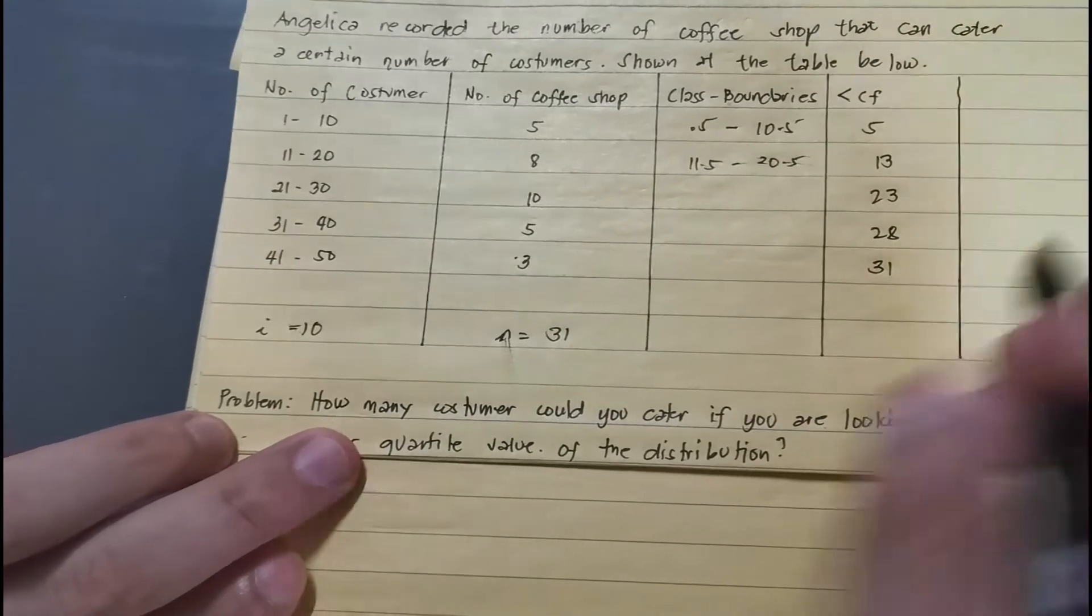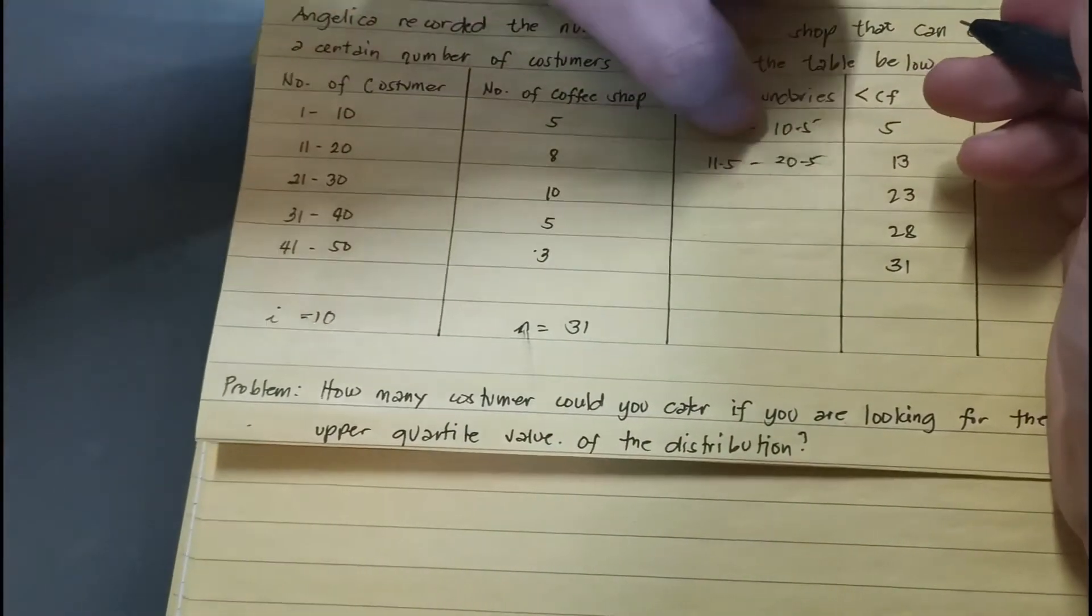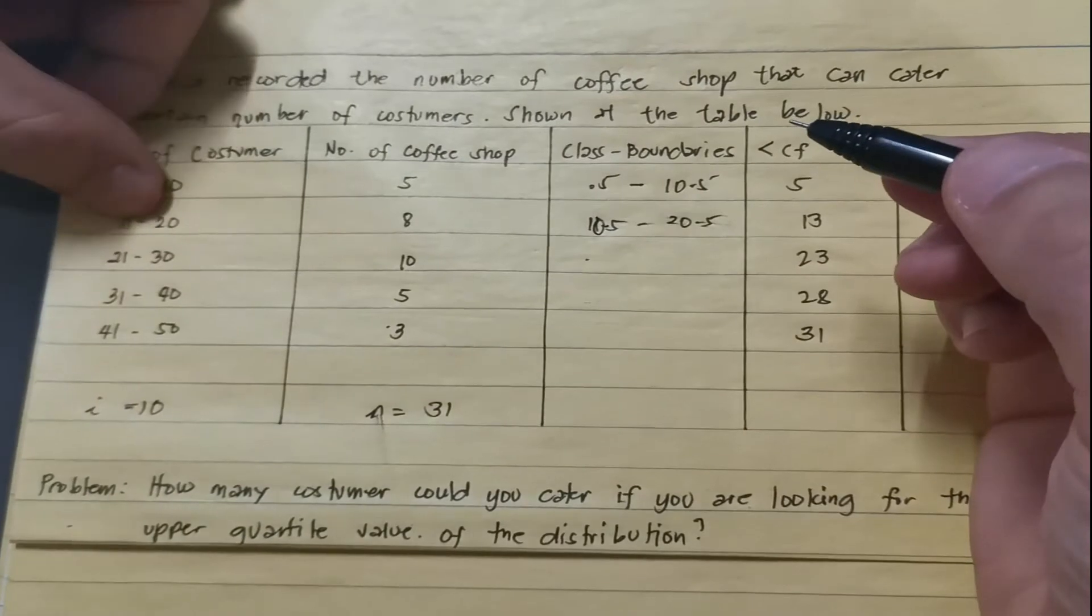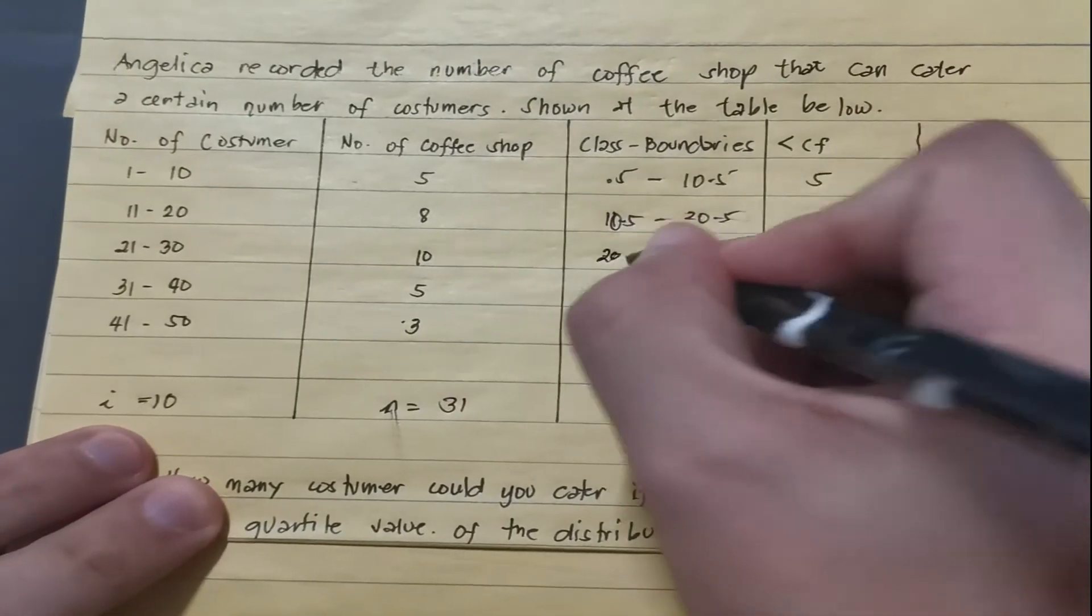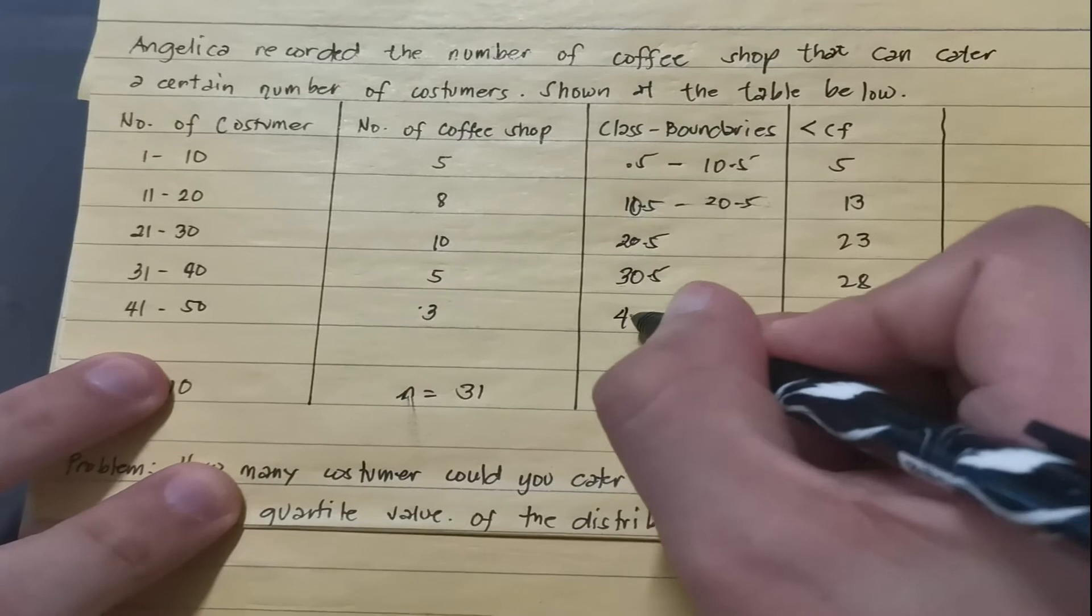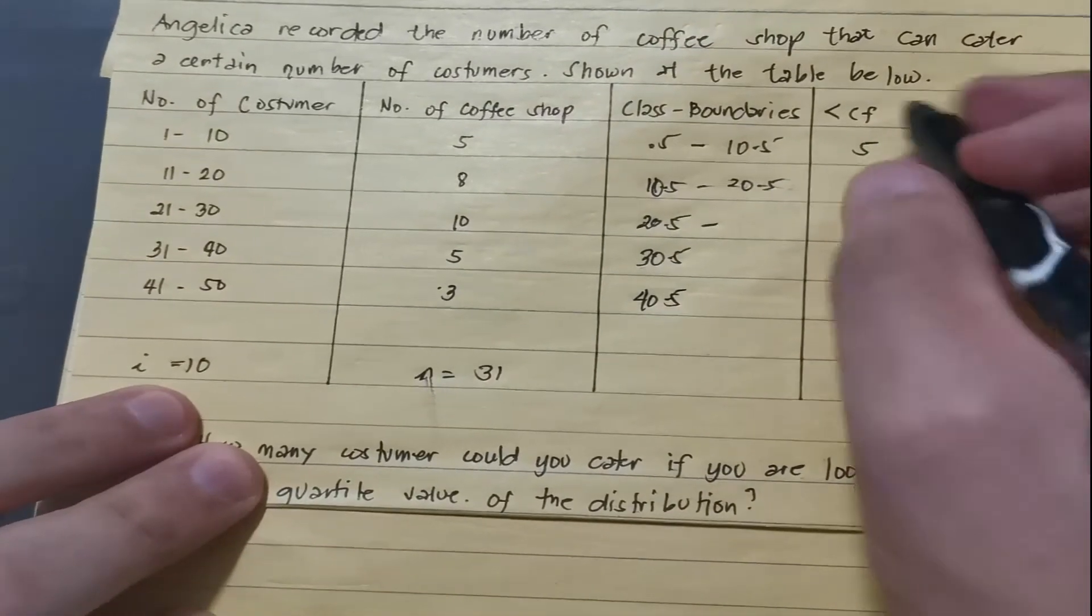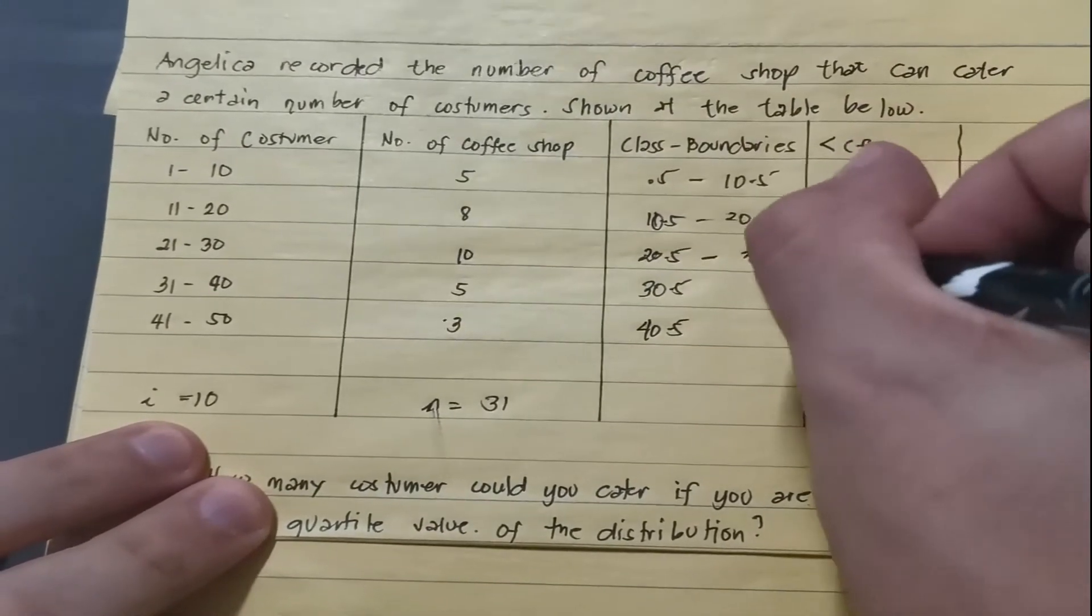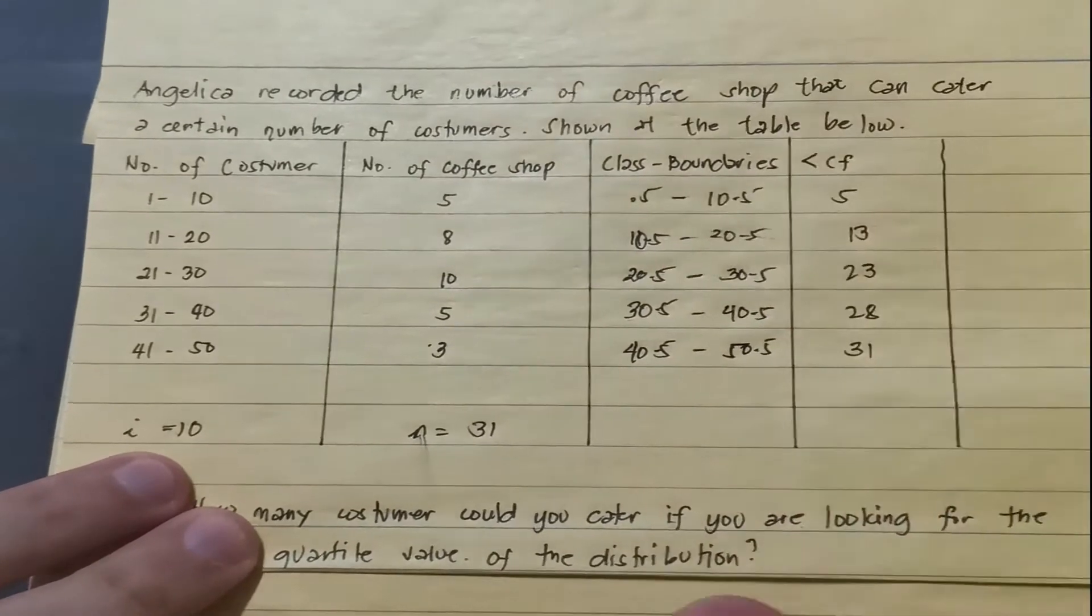And we should end with 31 for the cumulative frequency because that's the total sample. And then completing this column here, we will just simply add this one by 10. Hold on, this is supposed to be 10.5, sorry for that, because it's 11 minus 0.5, that's 10.5. And then to get the lower boundaries here, that's plus 10, you have 20.5 plus 10, that's 30.5, plus 10, that is 40.5. And then for the upper boundaries, so we do the same thing, 20.5 plus our i, that's 20.5 plus 10, you have 30.5, and then plus 10, that's 40.5, plus 10, that's 50.5. So we completed already the table.